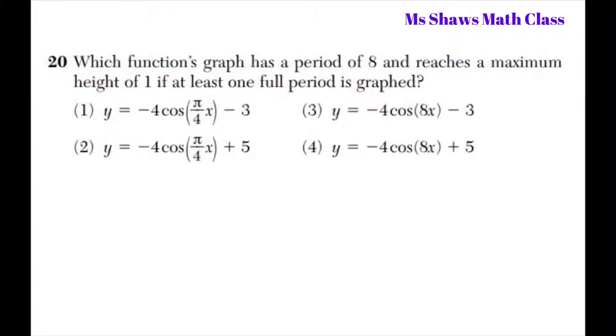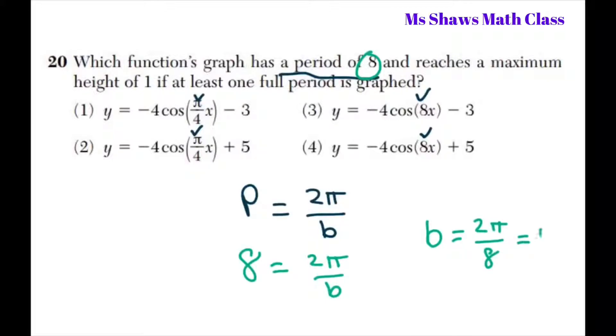So, the first thing we're going to do is look at this period of 8. We know the period equals 2π over b, b being this number here, so this value. So, we know the period is 8, so we set 8 equals 2π over b. In solving for b, we get b equals 2π divided by 8, which equals π over 4.